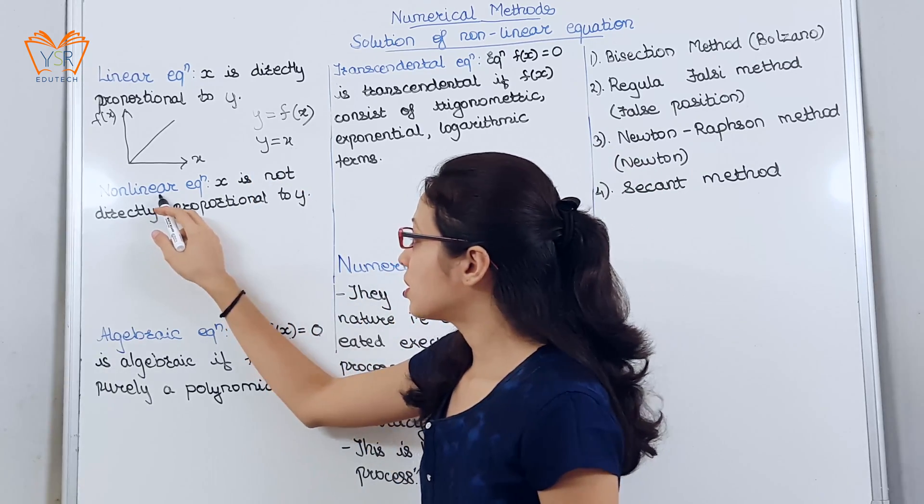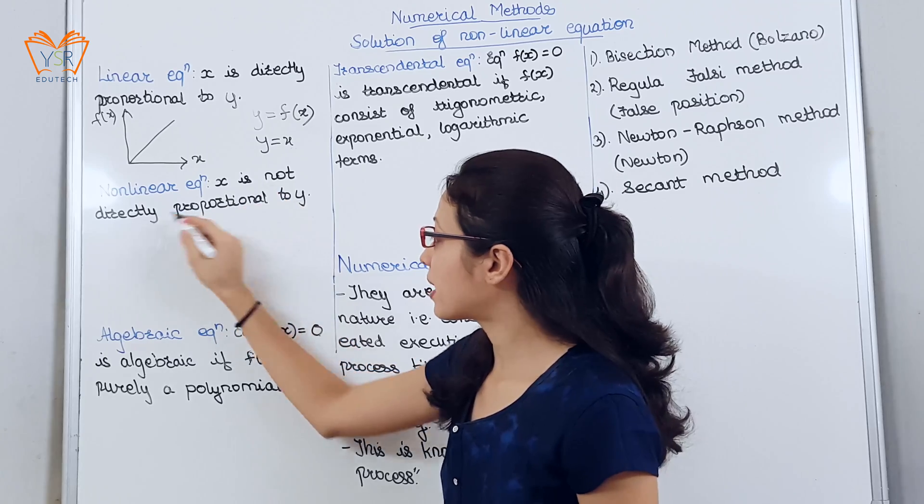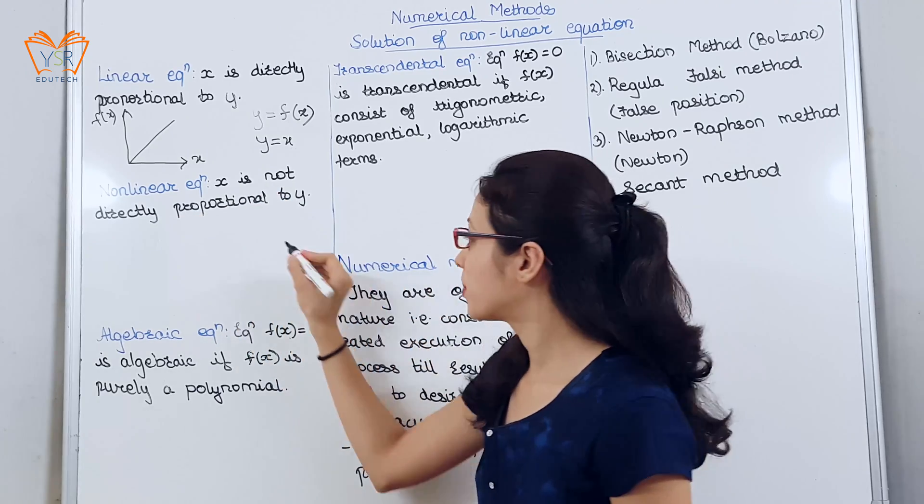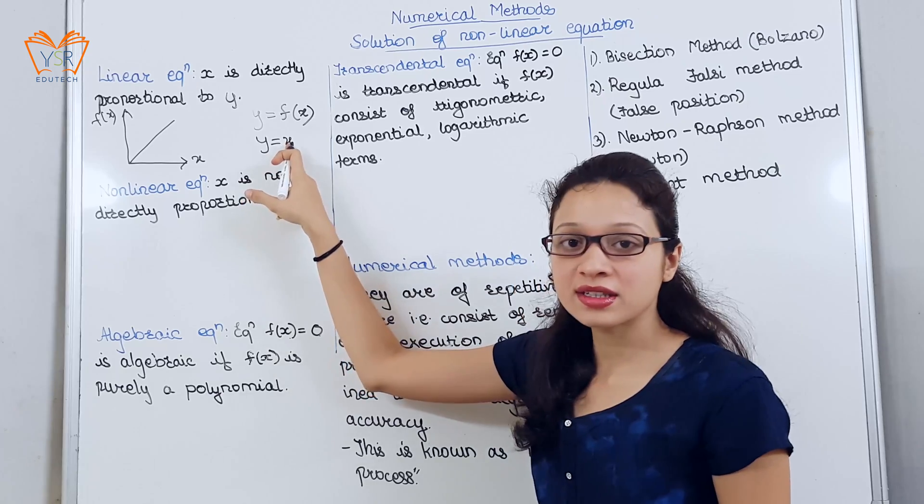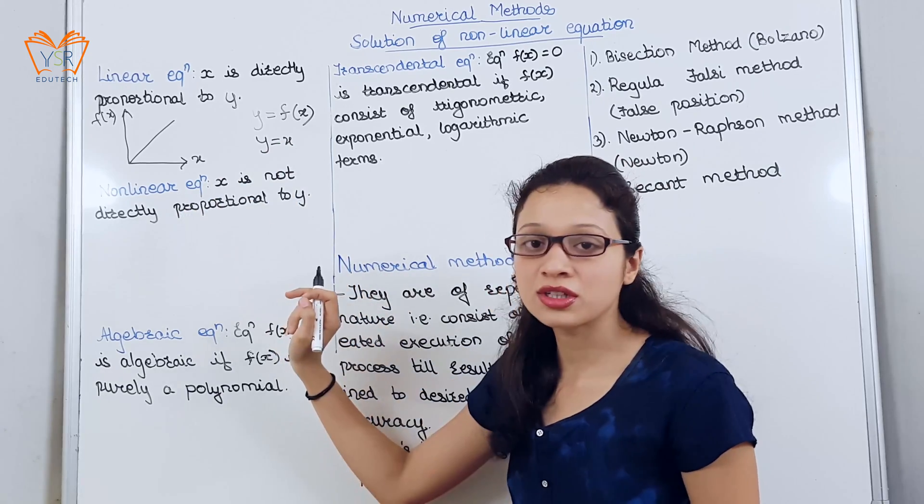Next, nonlinear equation: x is not directly proportional to y. If the polynomial has degree greater than 1, it is called a nonlinear equation.